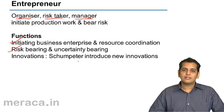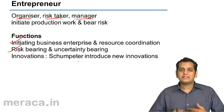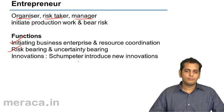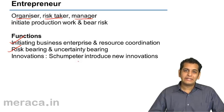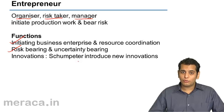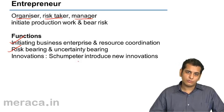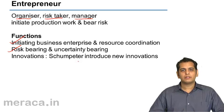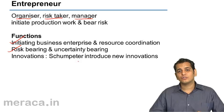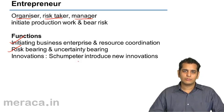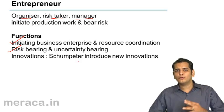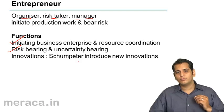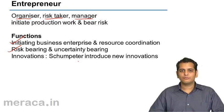Nokia was the top mobile seller because it was constantly innovating — it brought cameras into phones, multimedia into phones, and bigger screen sizes. But finally it ran out of innovation, and Apple and Samsung overtook it. Today Apple and Samsung are the world leaders in mobile phones because of constant innovation. In the words of Schumpeter, innovation is one of the most important functions of an entrepreneur.